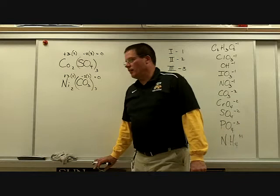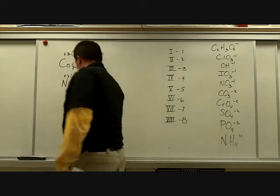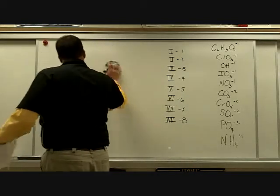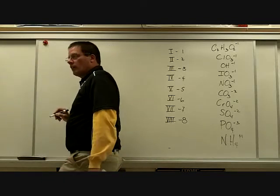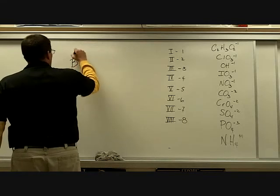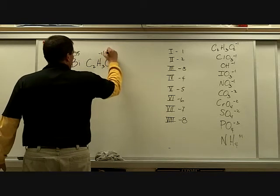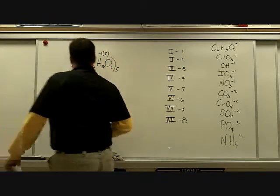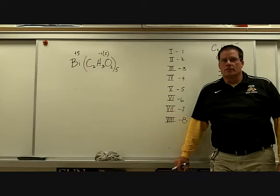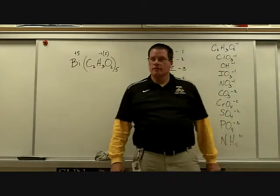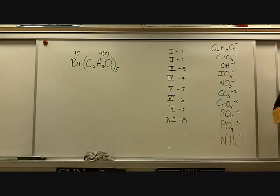Try bismuth(V) acetate on your own. Bismuth is Bi with a plus-5 charge. Acetate is C₂H₃O₂ with a negative-1 charge. Work it out — let's see how good you are. Acetate has a negative-1 charge; sulfate is SO₄. Remember, gold is Au — there's no G in gold. After bismuth(V) acetate, we'll do gold(III) sulfate.